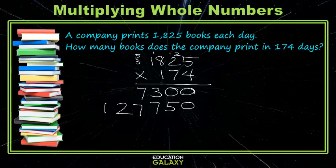We're moving into the 100's place, so we need to account for the fact that we're in the 100's place. And now we just do 1,825 times 1, which is just 1,825, but I'll work through it with you. 5 times 1 is 5, 2 times 1 is 2, 8 times 1 is 8, and 1 times 1 is 1.